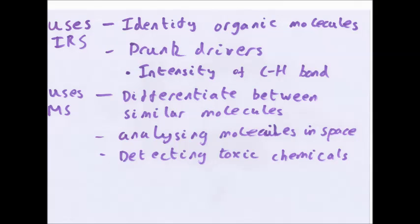Mass spectrometry can differentiate between similar molecules. So if you have isotopes, you can then work out the shape of the molecule by working out the fragmented ions. You can also analyze molecules in space. It's used for detecting toxic chemicals. So a few uses there.